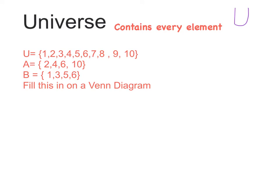So it's a little bit different to the union symbol. It's more of a capital U. And then I'm told A is equal to {2, 4, 6, 10}. So the set A equals 2, 4, 6, and 10. And B is equal to {1, 3, 5, 6}. And we're asked to fill this information into a Venn diagram.